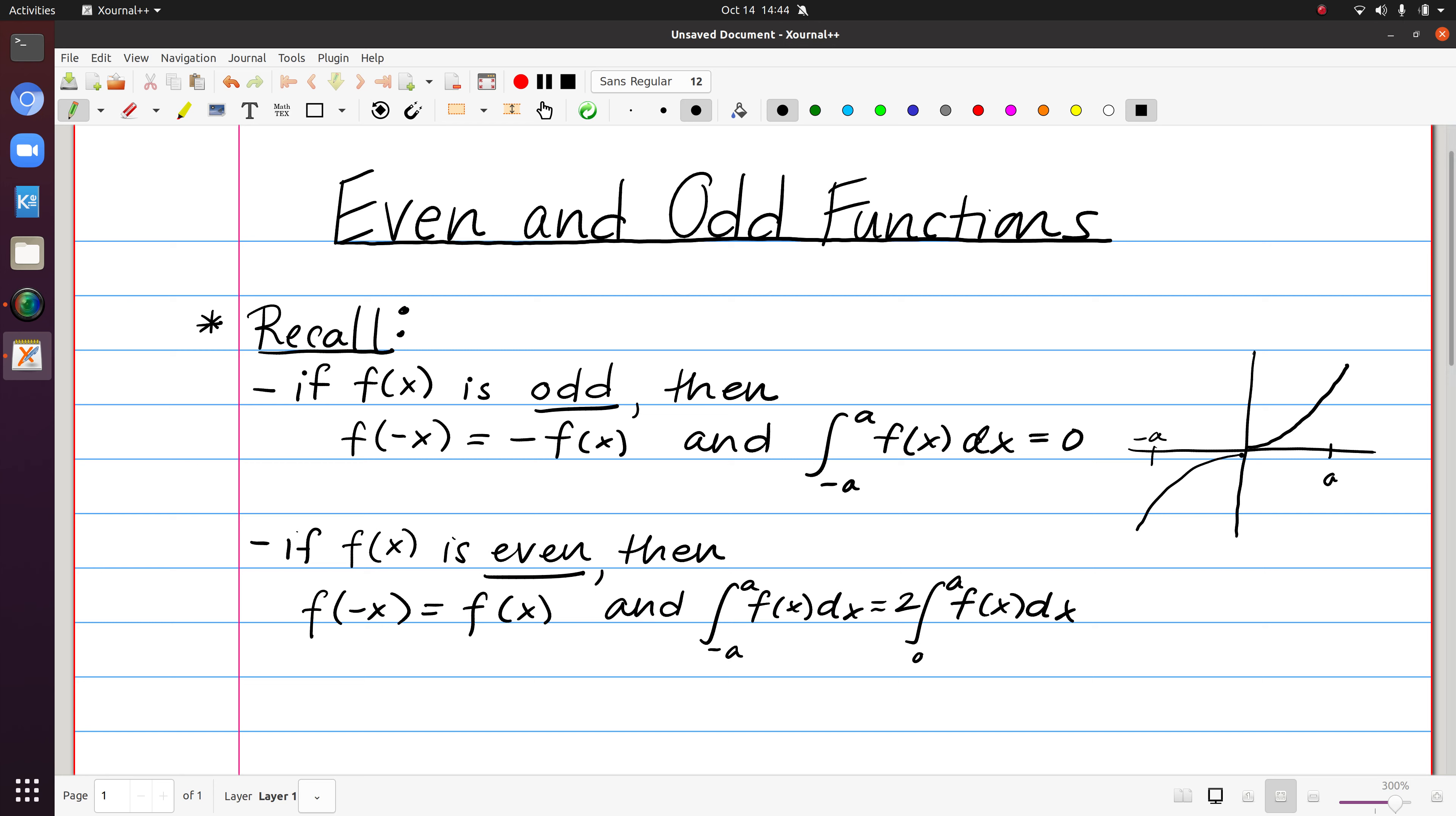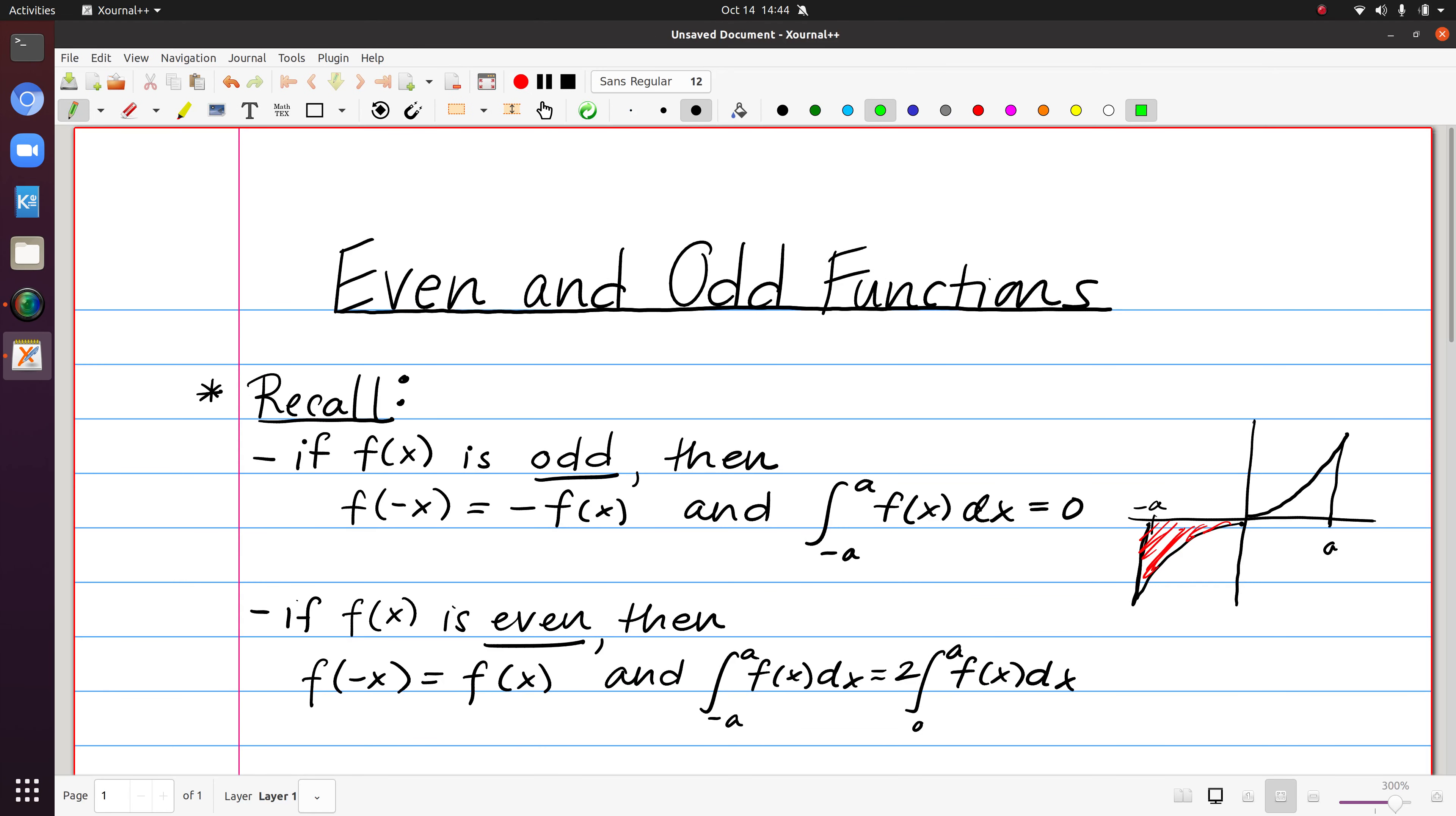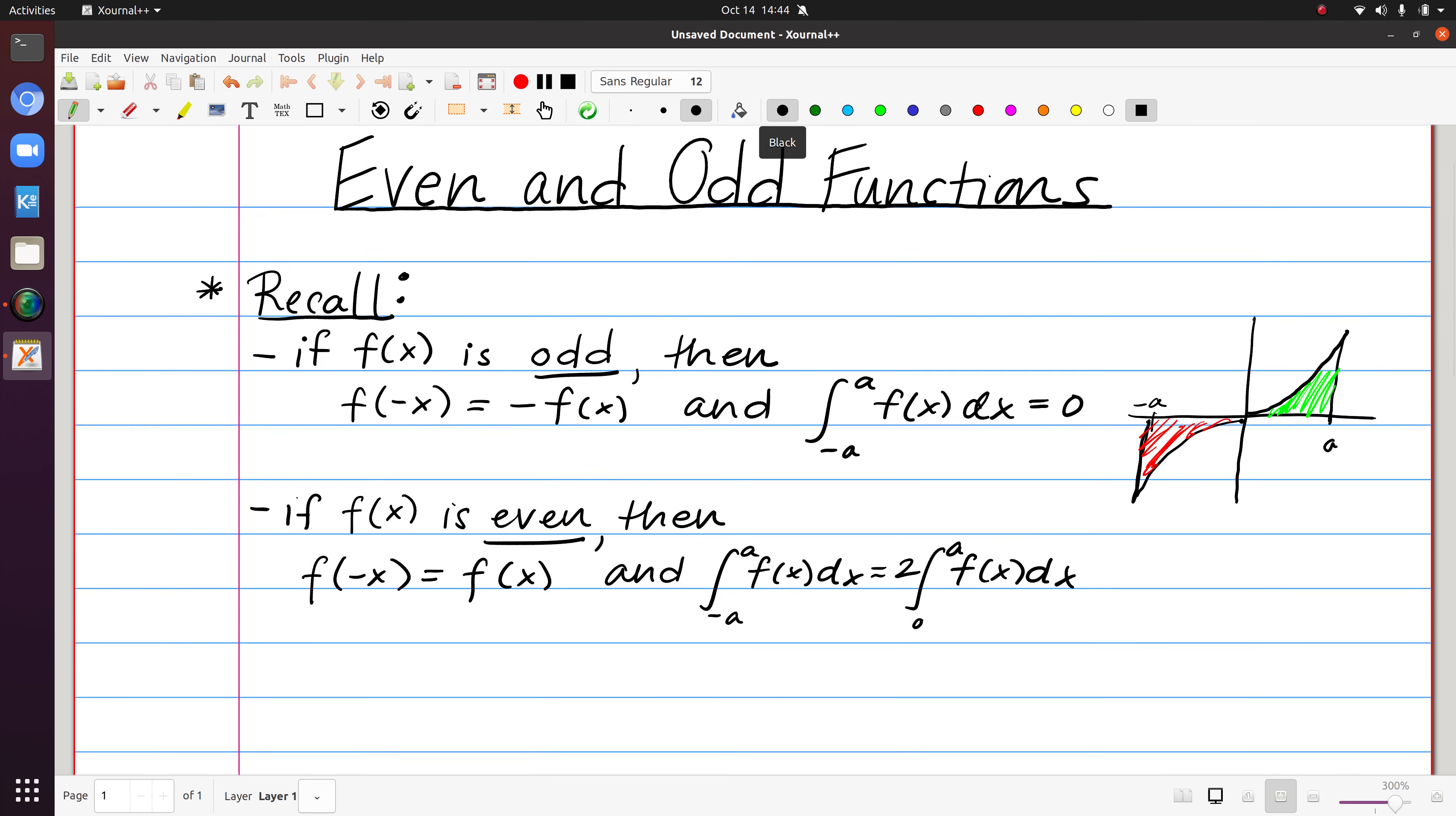So then if I were to think about the integral here from minus a to positive a, then we can see that the area that we'd be looking at is going to include this area, which is negative, and this area, which is positive. And those areas would be equal, and they would cancel one another, and that's why we would get 0.